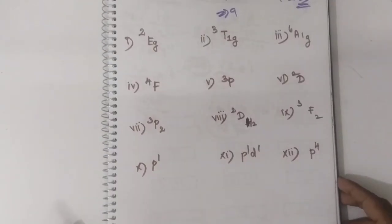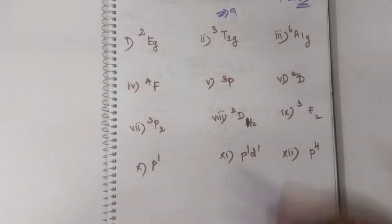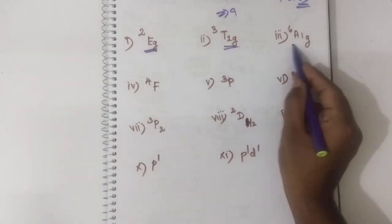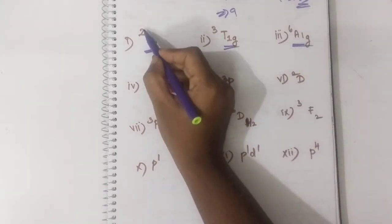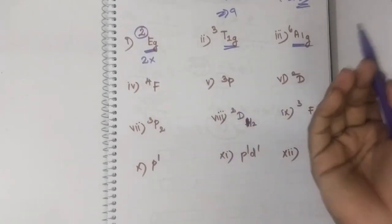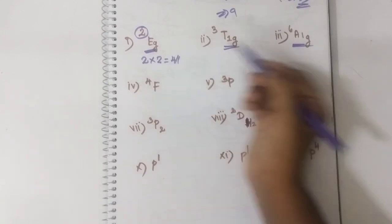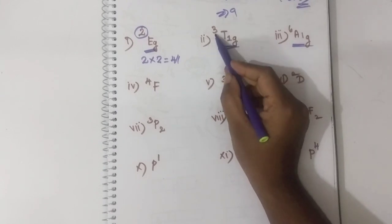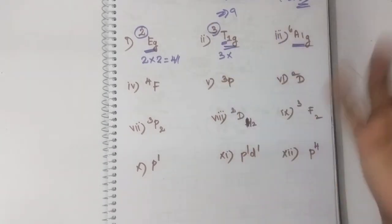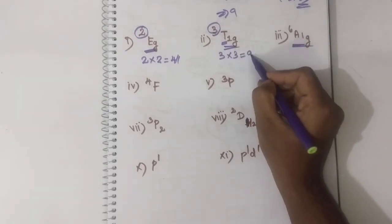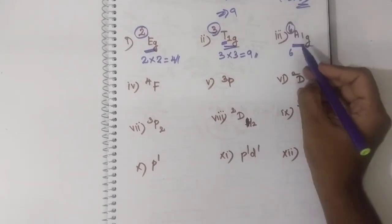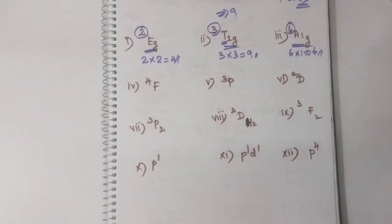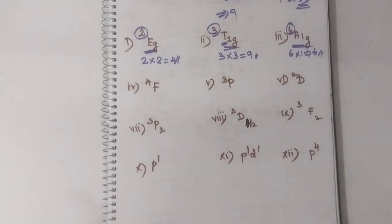Now let us find out the microstates for more Mulliken symbol examples. For ²E, multiplicity is 2 and E means dimension is 2, so the microstate is 4. For ³T, multiplicity is 3 and T means dimension is 3, so 3 into 3 equals 9 microstates. For ⁶A, multiplicity is 6 and A means dimension is 1, so the microstate is 6.